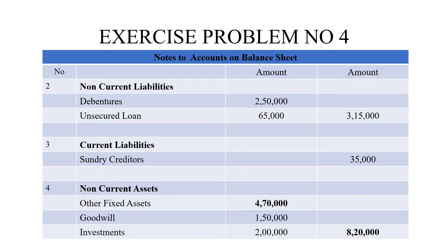Next is non-current liabilities. These are liabilities where the loan extends to 3-4 years. Debentures and unsecured loan amount to 2,50,000 and 65,000 rupees respectively, totalling 3,15,000 rupees.